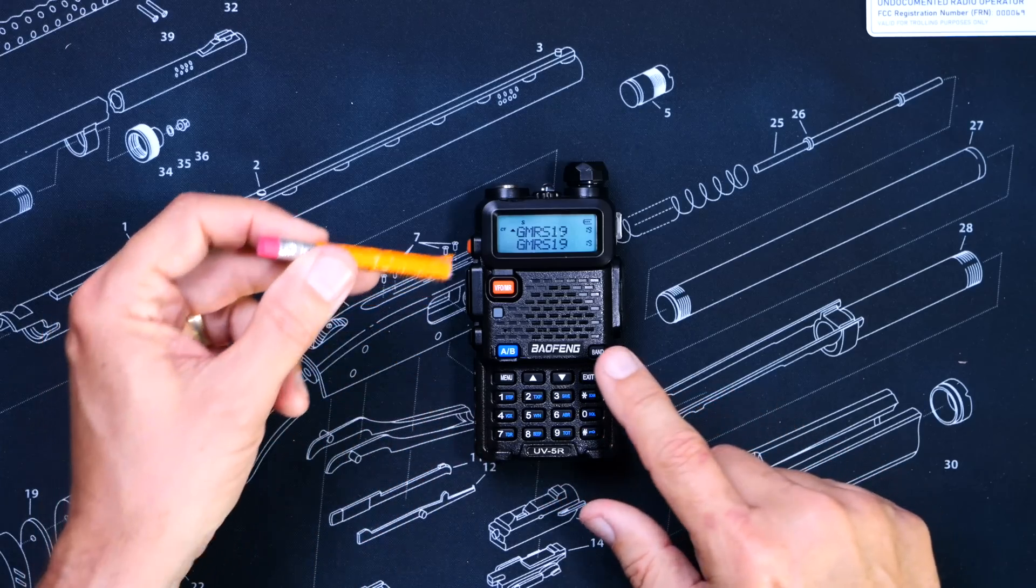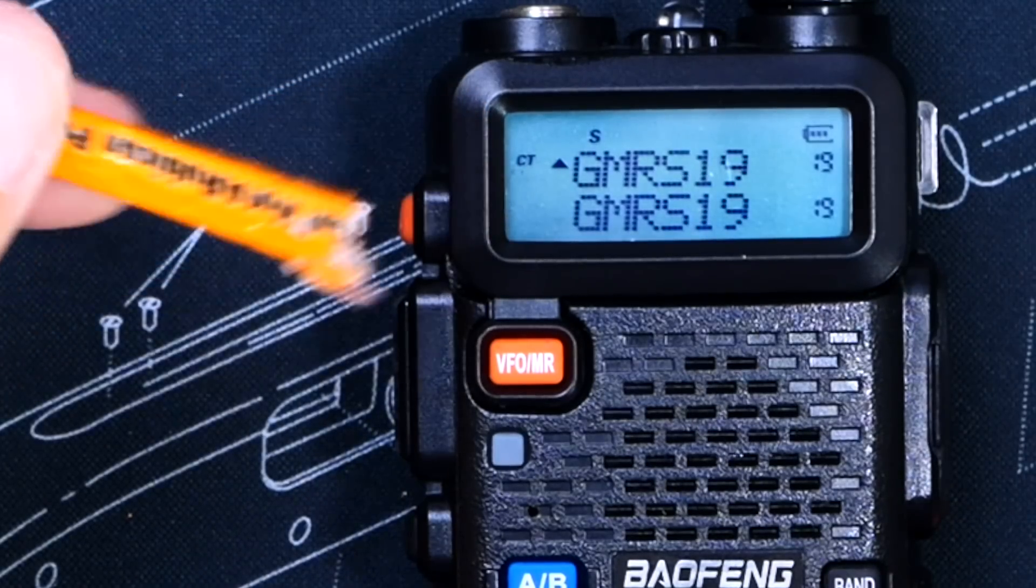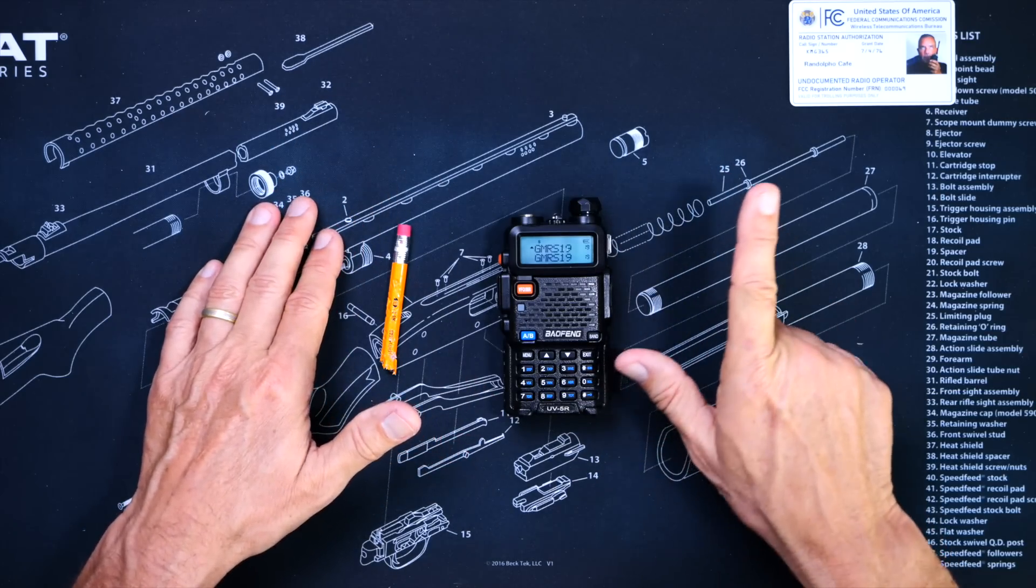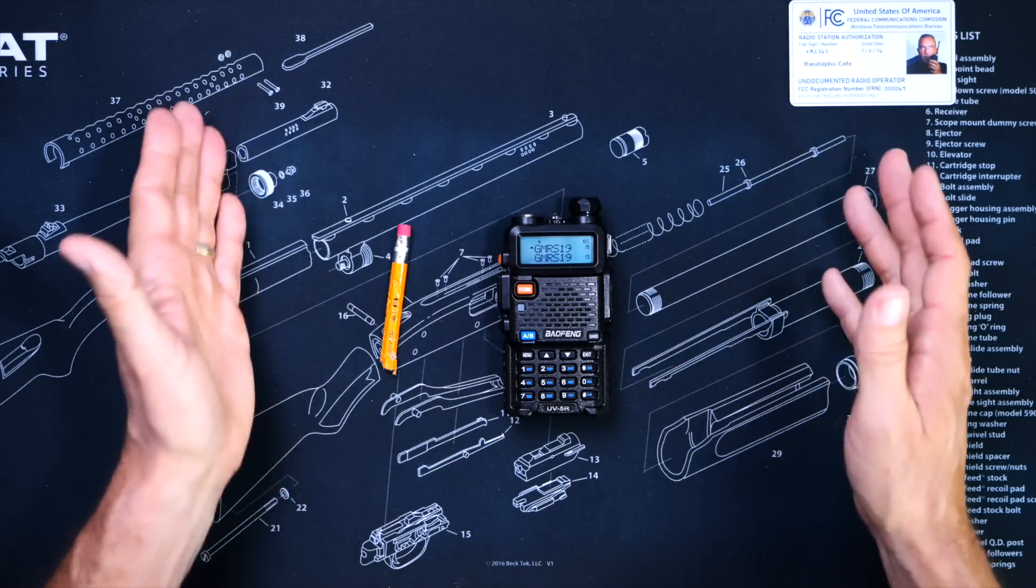Most radios have some sort of indicator on the screen to let you know that a tone is set. And allow me to be very clear, this applies even if you can hear them.